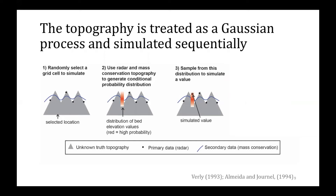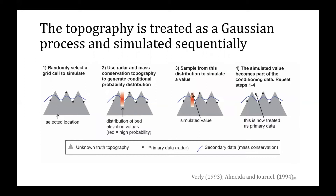Next, we simulate a value by sampling from the probability distribution. Notice that we're not selecting the most likely bed value, which would give us a smooth bed — we're selecting this value randomly. Once we've simulated a value, it becomes part of the conditioning data and is treated like any other radar measurement. After that, each of these steps is repeated until every point has been simulated. Once the simulation is complete, we reverse the normal score transformation so that the original elevation distribution is recovered. And then we perform this process over and over to generate an ensemble of many realizations, which allows us to sample the uncertainty space.